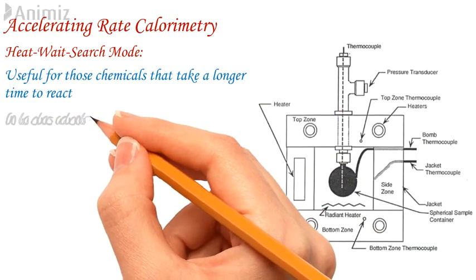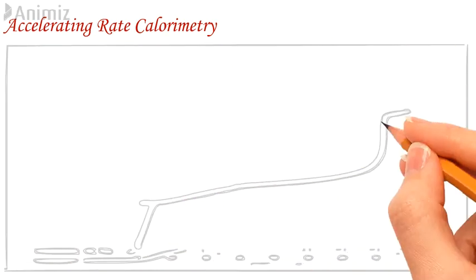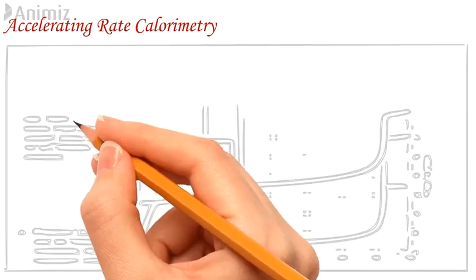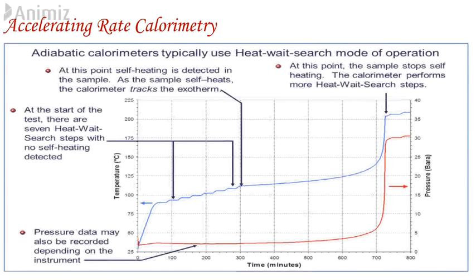Regarding results and interpretation: from ARC we get information about the exact onset of a thermal event (exothermic or endothermic) and the rate of temperature rise (dT/dt). Second, total pressure due to decomposition and the rate of pressure rise (dP/dt). Third, TD24. To determine the exact onset of decomposition or the time required to decompose at a certain temperature, one can hold the sample at a given temperature — also known as isothermal holding.